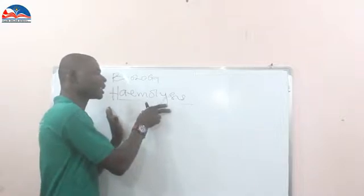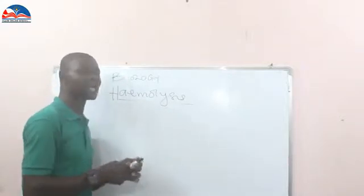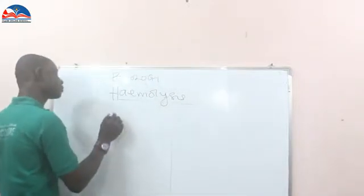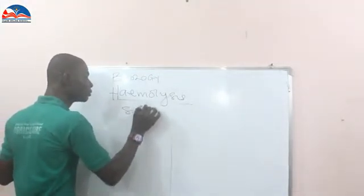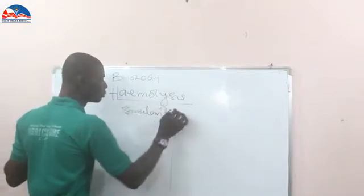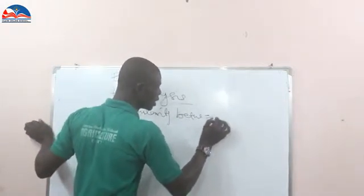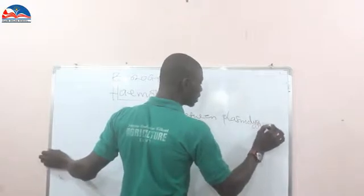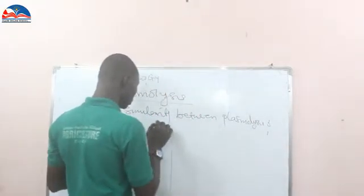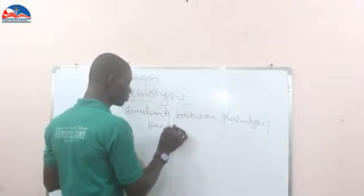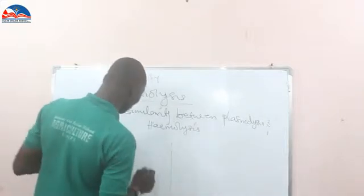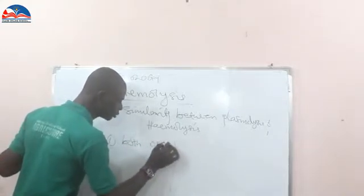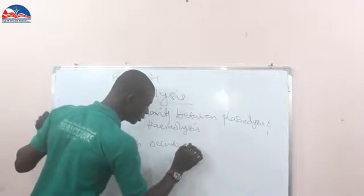But we have similarities between hemolysis and plasmolysis. Similarity number one: both of them occur in living cells.